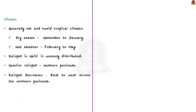Haiti has a generally hot and humid tropical climate. It experiences dry seasons from November to January, and wet weather from February through May. Rainfall in Haiti is unevenly distributed — heavy rainfall occurs in the southern peninsula, and rainfall decreases from east to west across the northern peninsula.